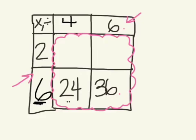Now I'm ready to complete the other products. 2 times 4 is 8. 2 times 6 is 12. This is a complete multiplication division puzzle.